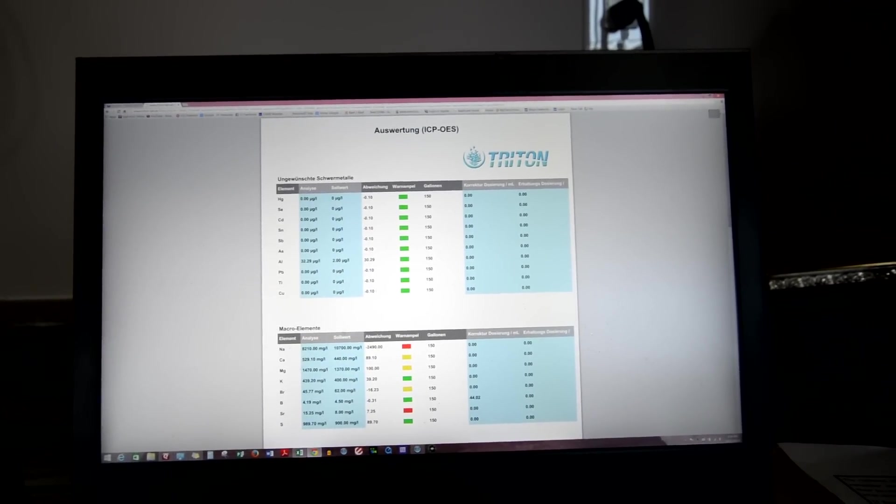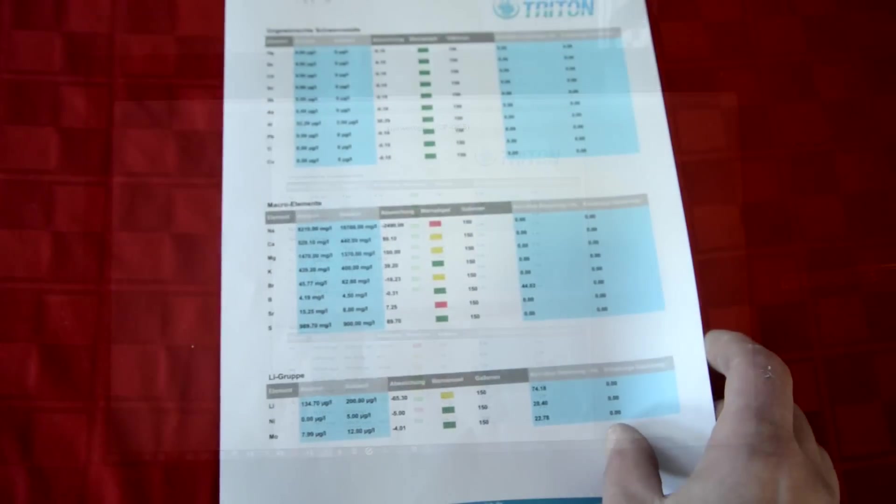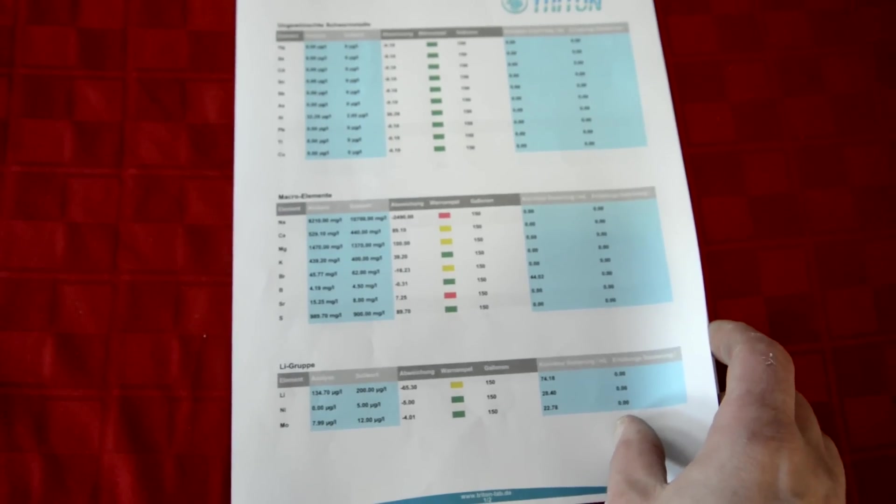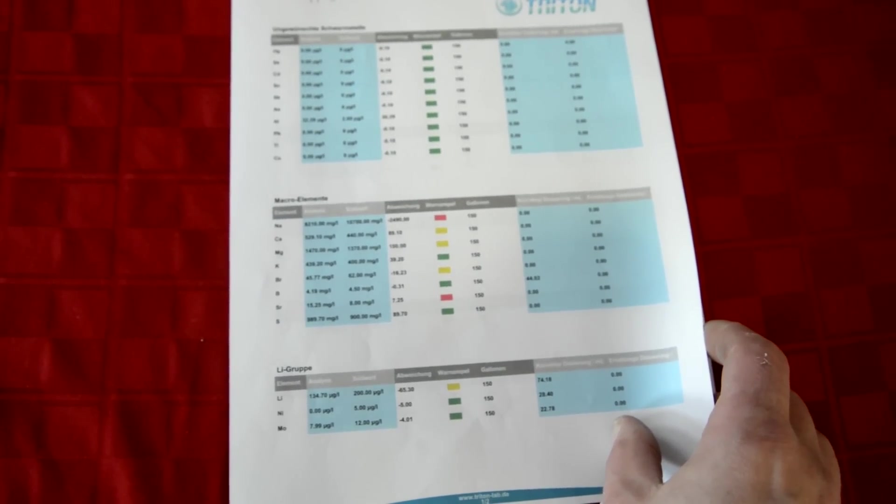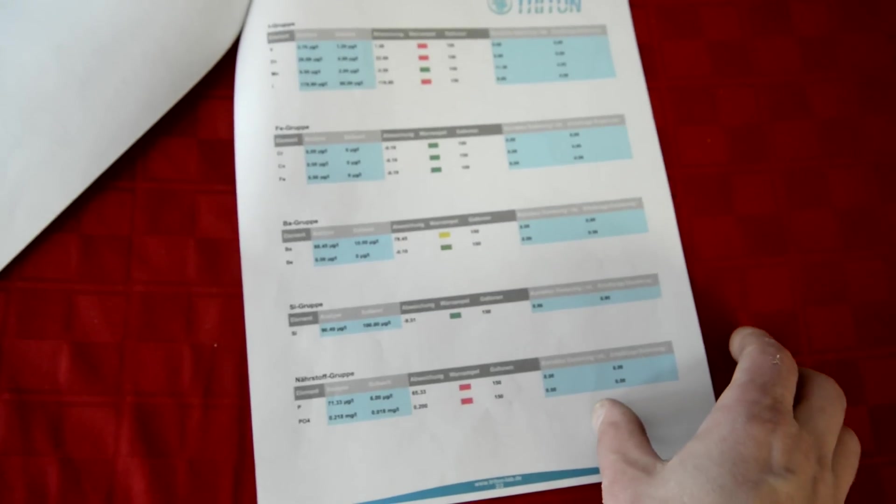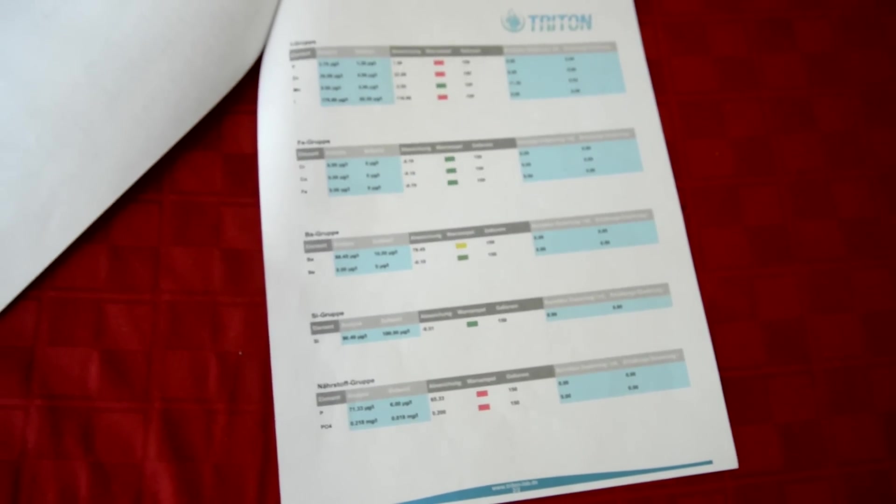So here's the printed version of it off my computer in PDF form. It's got so many different things in here folks. Macro elements, heavy metals, barium, strontium. I mean it's just got a plethora of tests that you can get off like one $50 water sample. It's just fantastic.